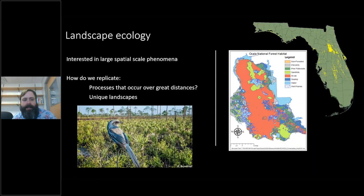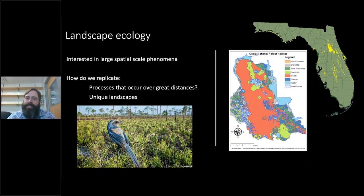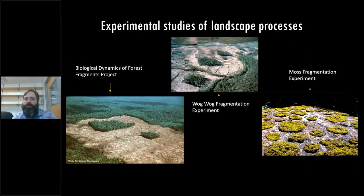If we think of something like the Florida scrub jay that occurs here — if you look at the top right, this is a map of Florida and all the yellow you see is scrub habitat — this is a unique habitat to Florida, and how do we replicate it if we want to see what's happening to the scrub jay and how landscape change is affecting the species? That's where experimental studies come in.